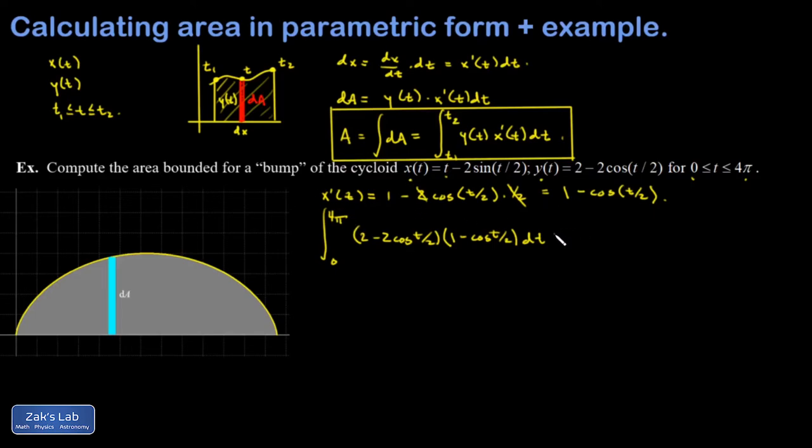When I expand these terms I end up with 1 - 2cos(t/2), both of those are easy to integrate, and then the third term is not easy to integrate, so it's cos²(t/2).